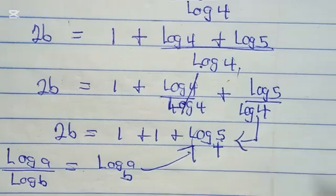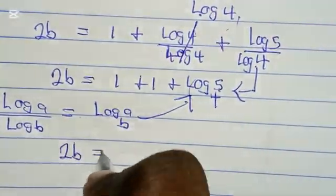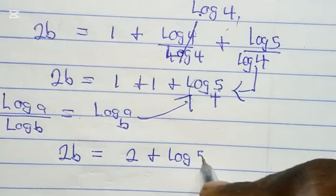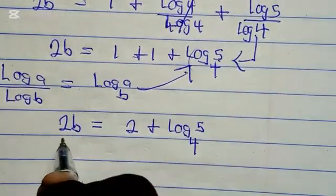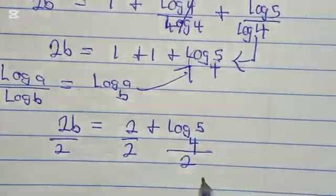Now we have 2b = 1 + 1, which is 2, plus log 5 base 4. Let's divide all through by 2.